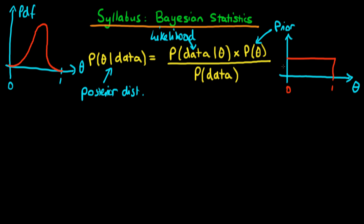The prior is often where non-Bayesians think that Bayesian statistics is being fairly subjective. Whilst that is true, as the amount of data that you collect increases, the prior plays less and less importance in terms of its determination of the posterior. There are also a number of methods for making this prior as objective as possible — things called Jeffreys' prior and also reference priors. We're going to cover those in due course.